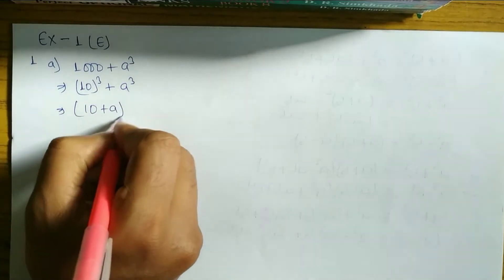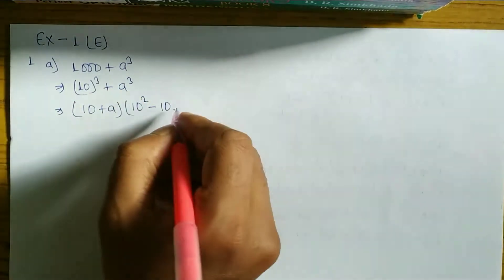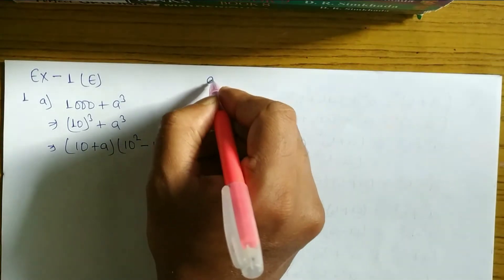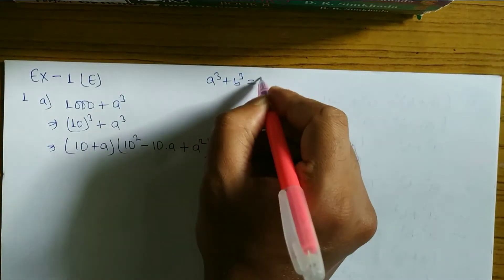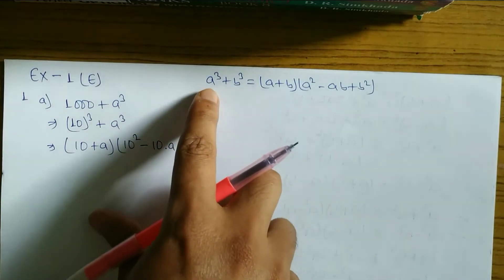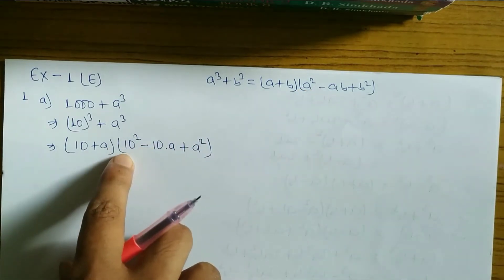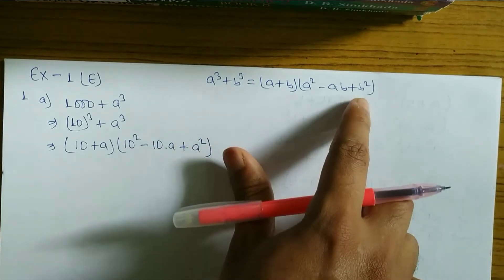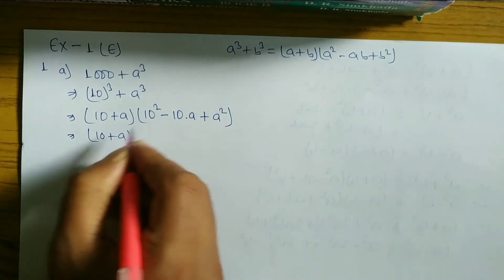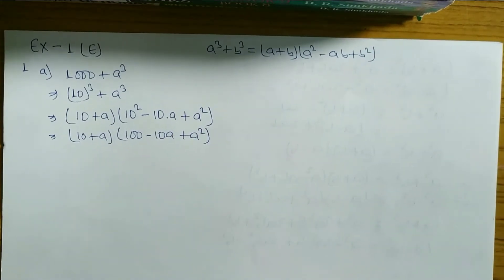The formula is A plus B times A square minus AB plus B square. Here A means 10 and B means A. So A plus B means 10 plus A. After that, A square means 10 square, minus AB means 10 times A, plus B square means A square. Solving: 10 plus A, times 100 minus 10A plus A square. Hope you understand this question.